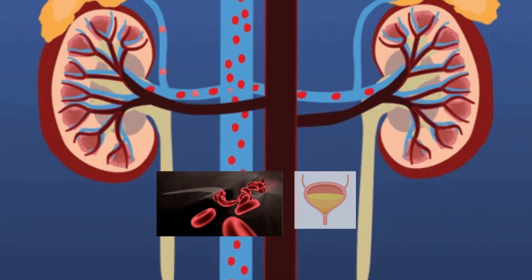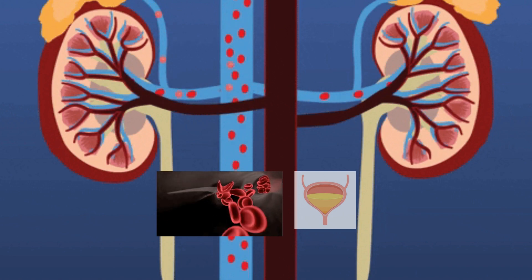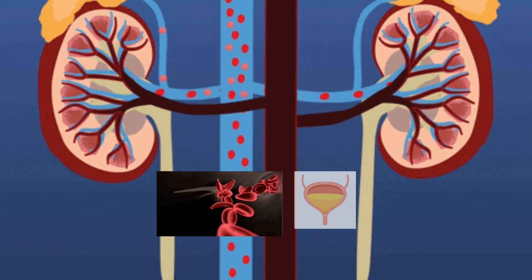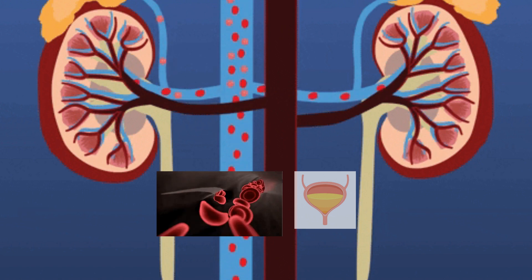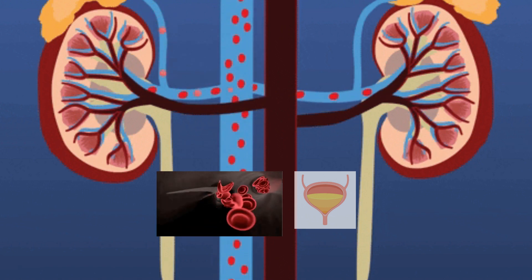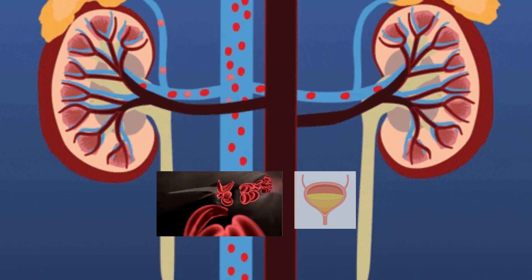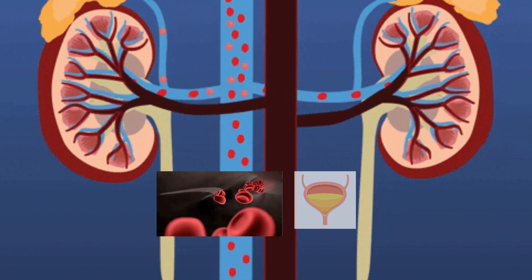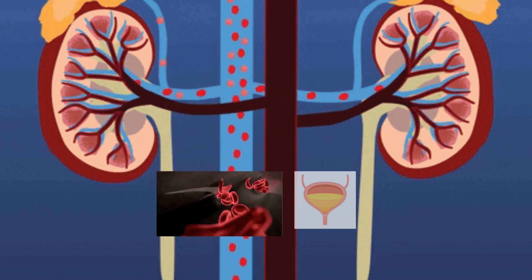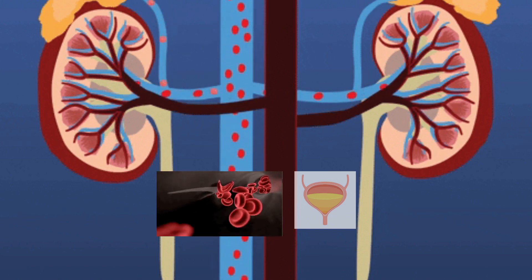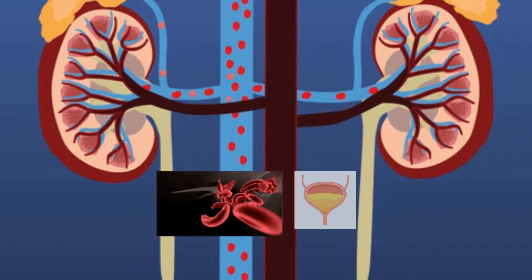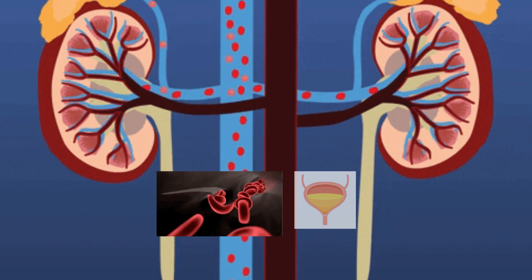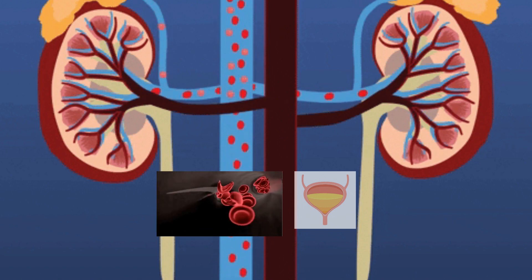The kidneys are two bean-shaped organs, each about the size of a fist. They are located just below the rib cage, one on each side of your spine. Healthy kidneys filter about half a cup of blood every minute, removing waste and extra water to make urine. The urine flows from the kidneys to the bladder through two thin tubes of muscle called ureters.